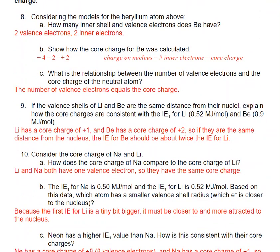If the valence shells of lithium and beryllium are the same distance from their nuclei, how are the core charges consistent with their first ionization energies? Lithium has a core charge of +1, whereas beryllium has a core charge of +2. So if they are the same distance from the nucleus, the ionization energy for beryllium should be about twice the ionization energy for lithium.